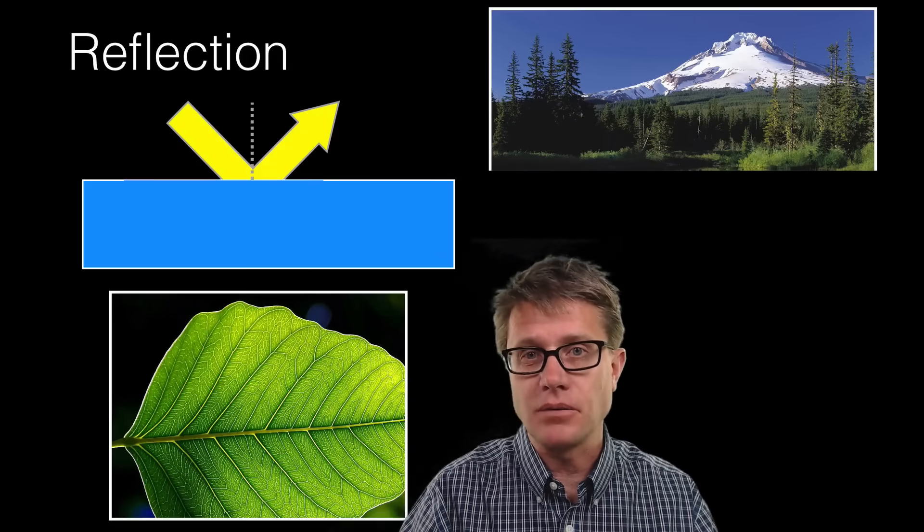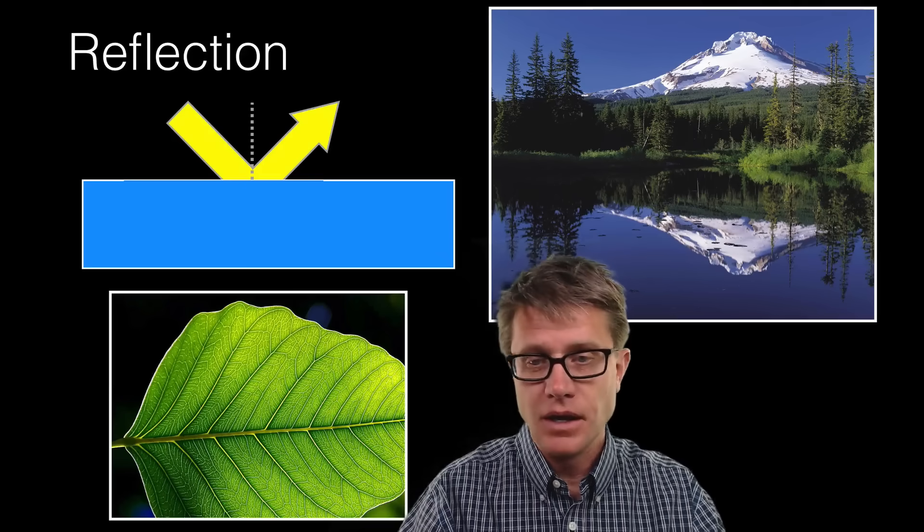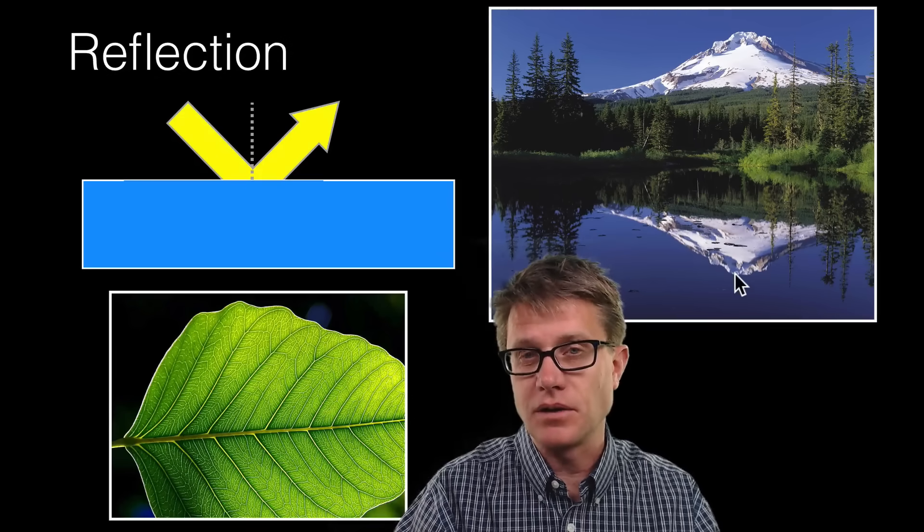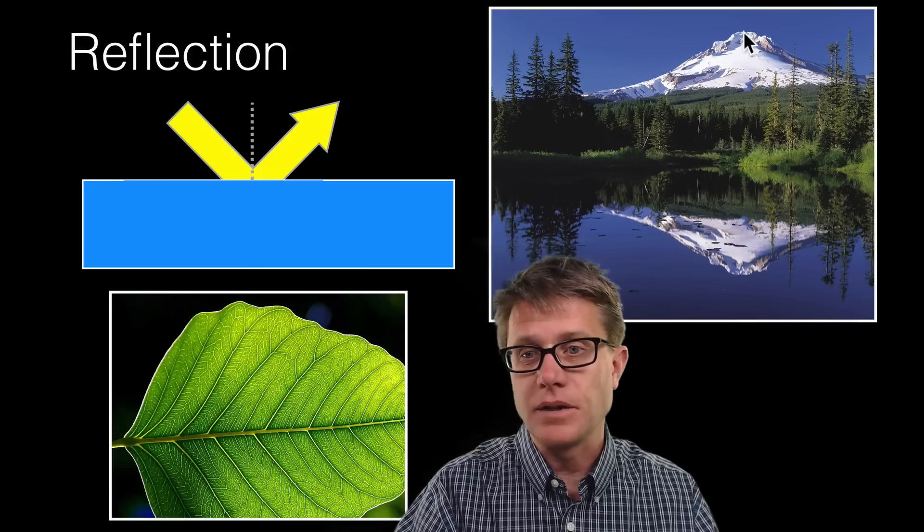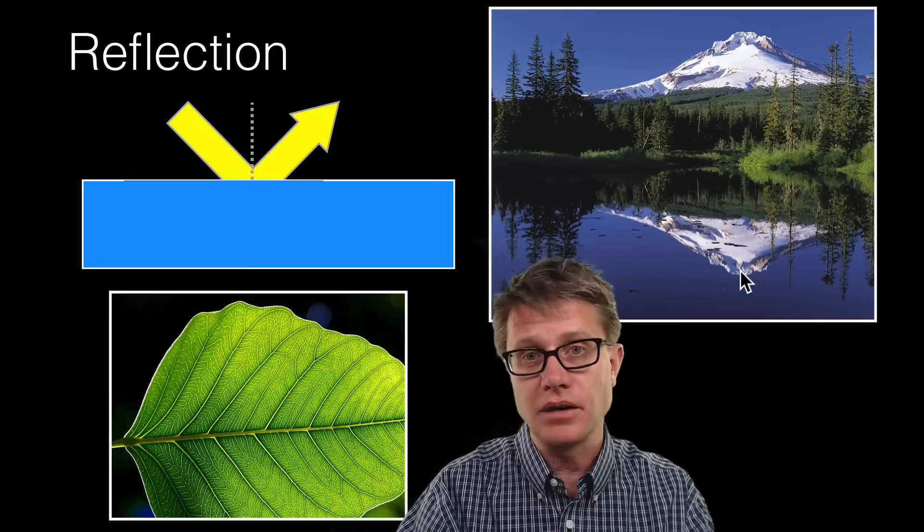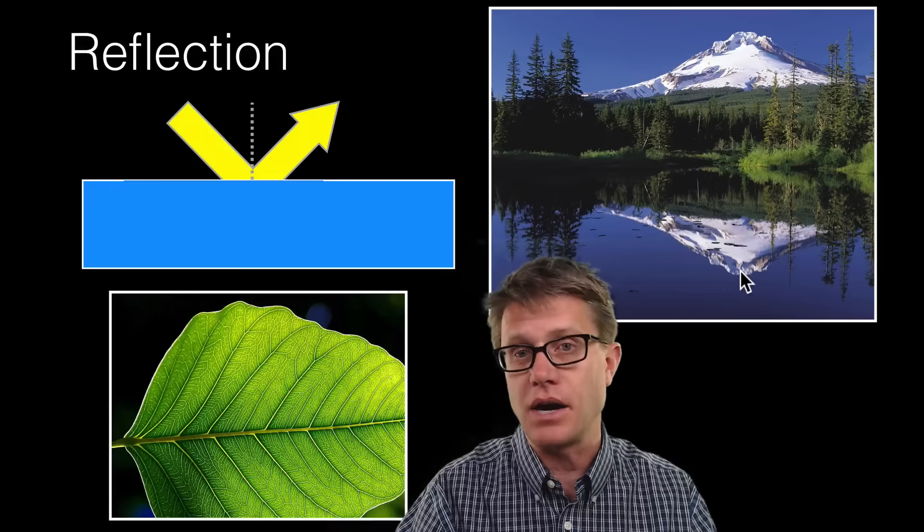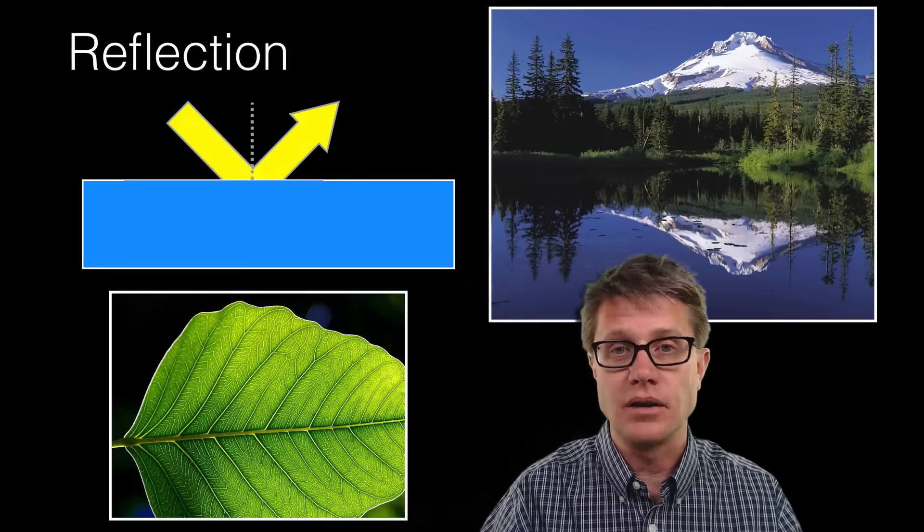If we're looking at a mountain in the reflection of a lake, that is going to be reflection that is causing it. The mountain is not down in the lake. So how did that image get to your eye? Well, the light from the top of the mountain is reflecting at an angle off of the surface of the water and it's going to your eye. And so it appears as though it's down in the water even though it's not.